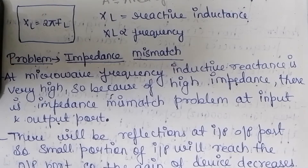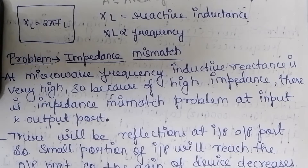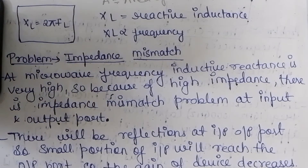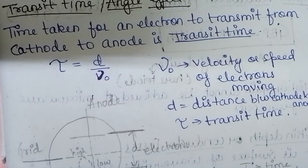Also, as frequency increases, the reactance X_L = 2πfL increases, and hence the voltages appearing at the active electrodes are less than the voltage at the base pins. This results in reduced gain for the tube amplifier. Hence, impedance mismatch is the core problem of lead inductance.